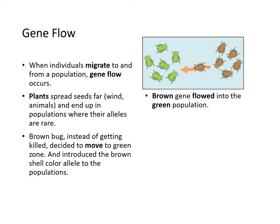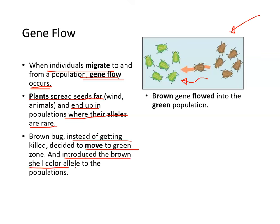When individuals migrate in and out of a population, gene flow can occur — it's literally a flow of genes. Plants can spread seeds far, carried by animals, and end up in a population where their alleles are very rare. Here, a brown bug decided to move to the green zone and introduced the brown shell-color allele to the green population — in other words, the brown gene flowed into the green population.